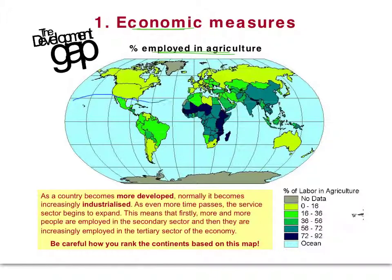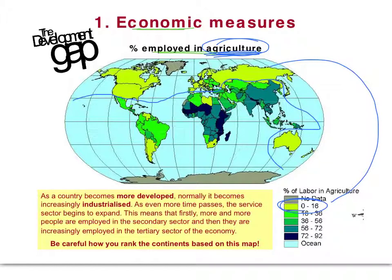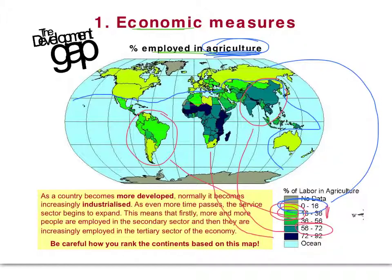Looking at the global patterns for percentage employed in agriculture: more developed countries have fewer people employed in agriculture. In MEDCs, most people are employed in manufacturing or tertiary activities. Within LEDC continents, South America is mostly lighter colours representing lower values, meaning fewer people in agriculture. Asia comes in around the middle range. And Sub-Saharan Africa falls into the two higher categories. Ranking the three LEDC continents: South America is most developed, then Asia, then Sub-Saharan Africa as the least developed — and that pattern is emerging yet again.